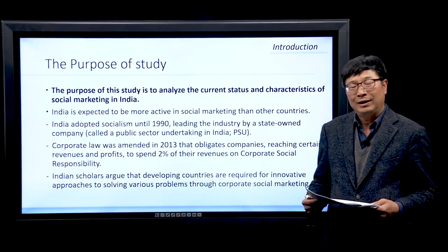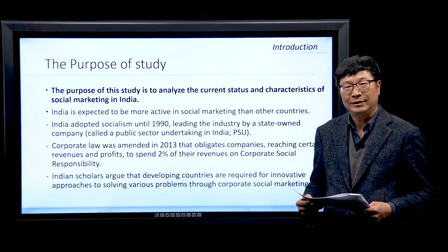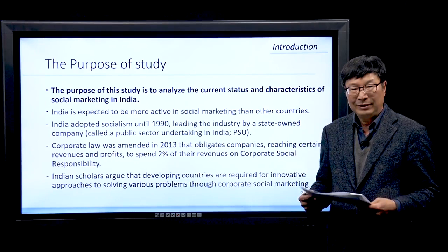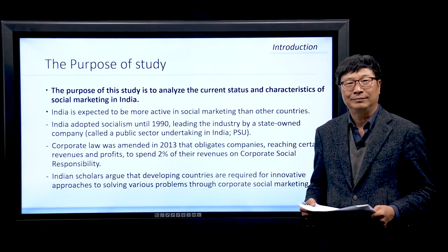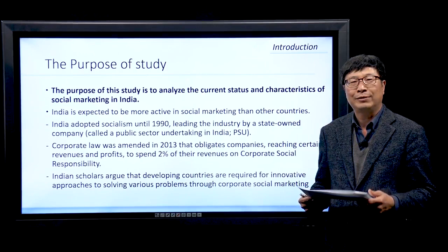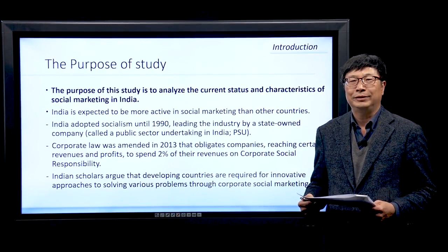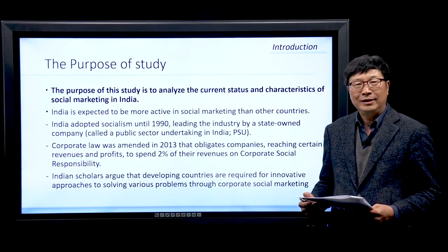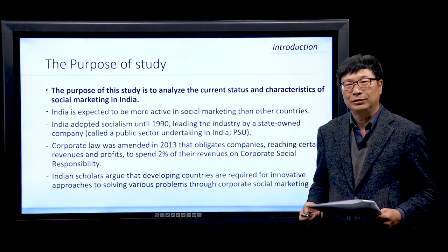We are interested in the characteristics of social marketing in India. Our research purpose is to analyze the current state and characteristics of social marketing in India. India is expected to be more active in social marketing than other countries. India adopted socialism until 1990, and corporate law was amended in 2013, obligating companies reaching certain revenues and profits to spend 2% of their revenue on corporate social responsibilities. Indian scholars argue that developing countries require innovative approaches to solving various problems through corporate social marketing.